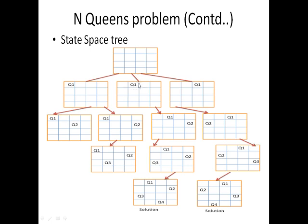When placing queen 1 in the 2nd position, we move to the next level. Queen 2 is placed in the 4th position. Checking the constraints — no queen in the same column, row, or diagonal — the only possible location is the 1st position, so queen 3 is placed in the 1st position. We then check further: queen 4 can be placed in the 3rd position.